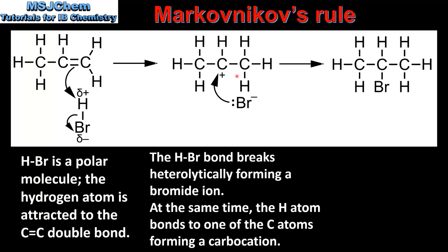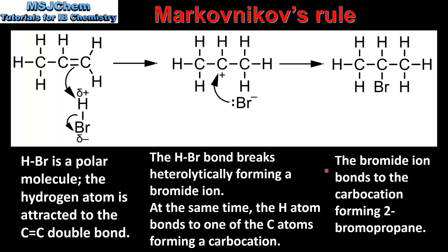This results in the formation of a carbocation. Finally, the bromide ion bonds to the carbocation forming 2-bromopropane. The bromide ion uses one of its lone pairs of electrons to form a bond with the carbocation. The major product of the reaction is 2-bromopropane.